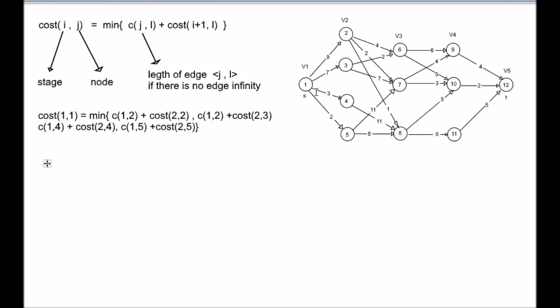To find the path from S to T, we can start the function as cost(1,1). In order to solve (1,1), we need the value of (2,2), (2,3), (2,5), and (2,4). For solving (2,2), we need the value of stage 3. For stage 3, we need the value of stage 4. So, let us start from stage 4.